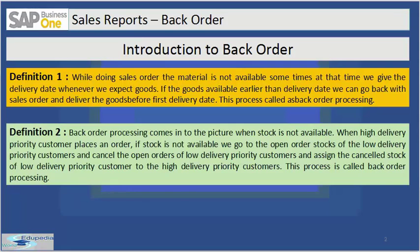Definition number one: while doing a sales order, the material may not be available sometimes. At that time you will give a delivery date when you expect the goods to be in stock. When the goods are available, if they are available earlier than the delivery date, you can go back to the sales order and deliver the goods before the first delivery date. This process is called backorder processing.